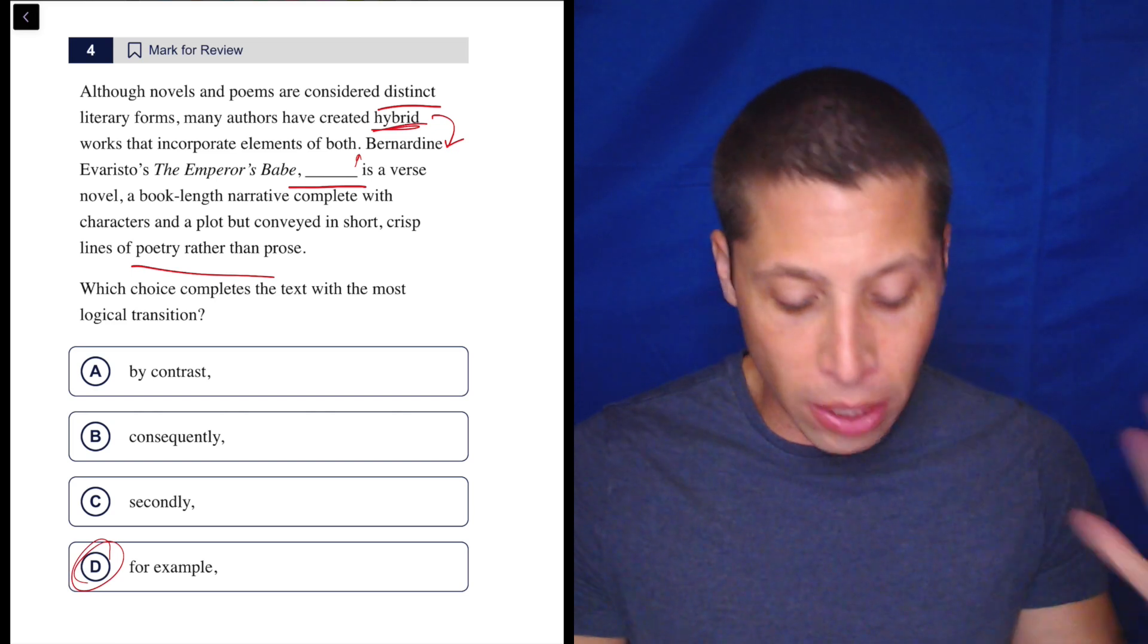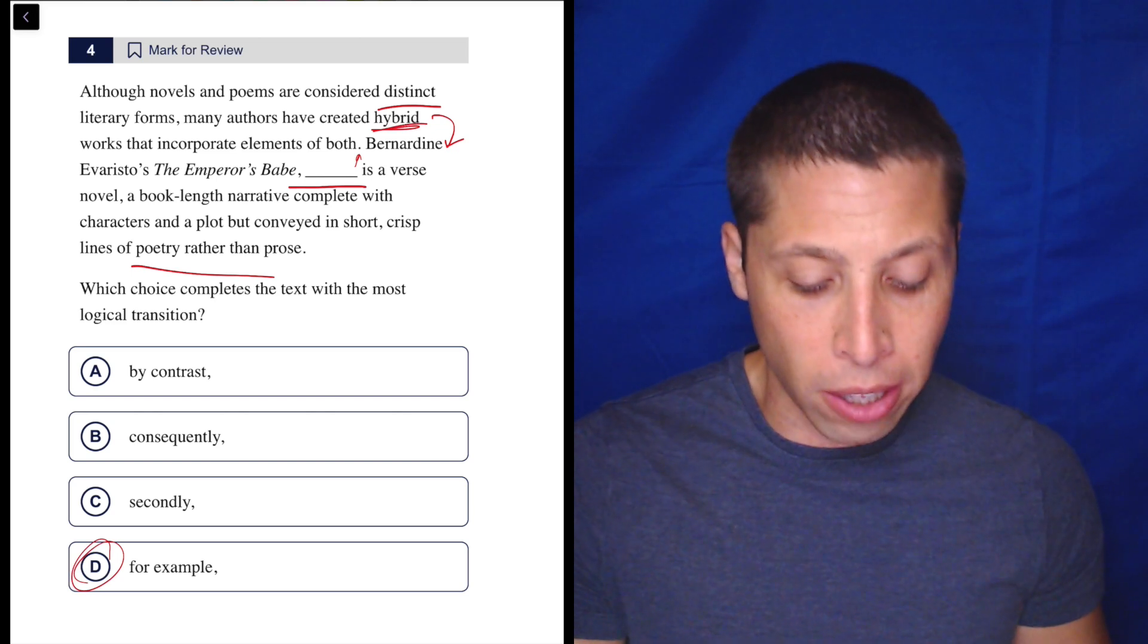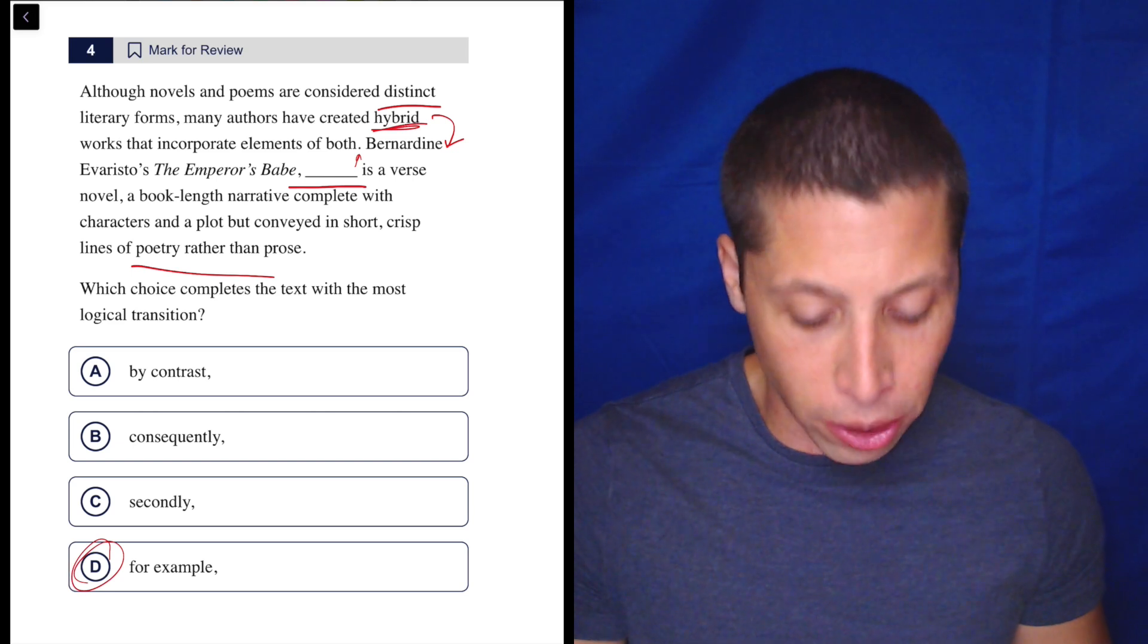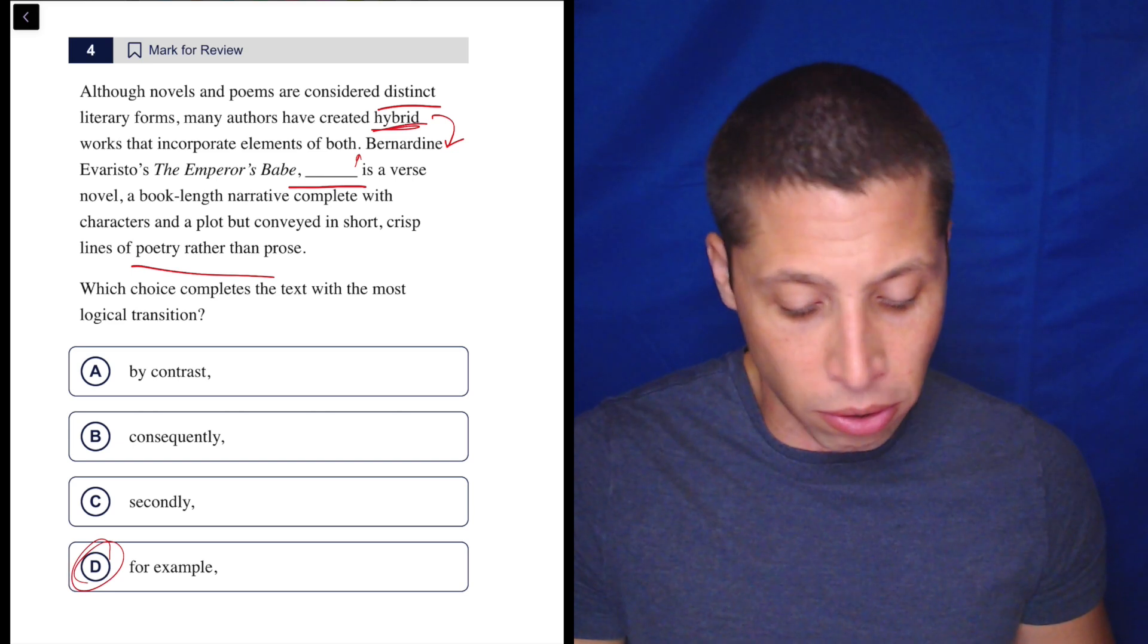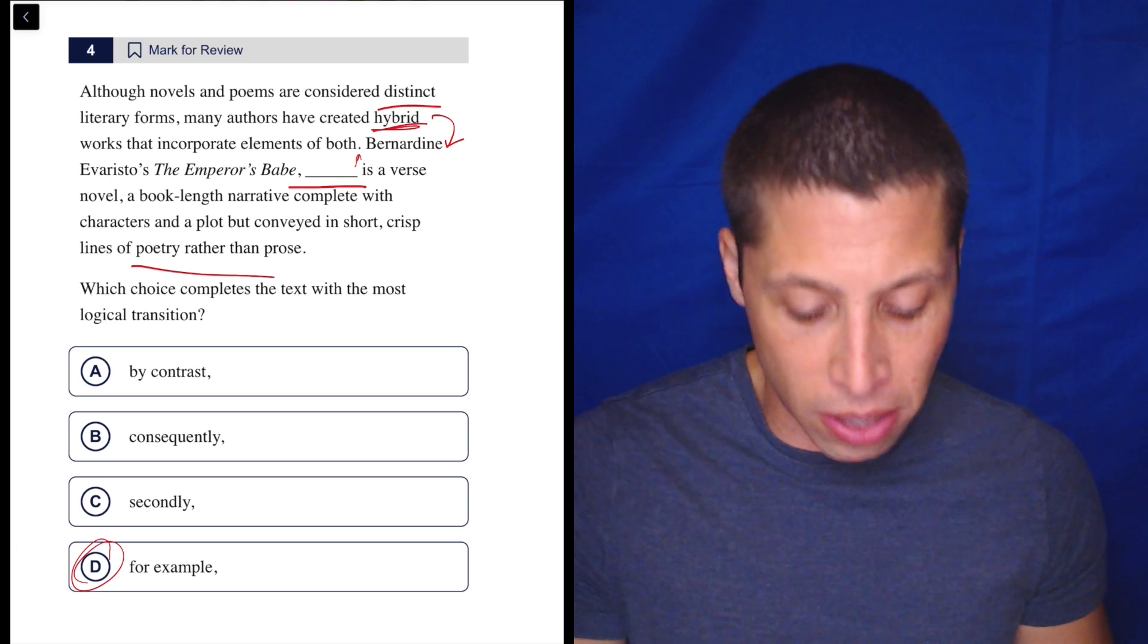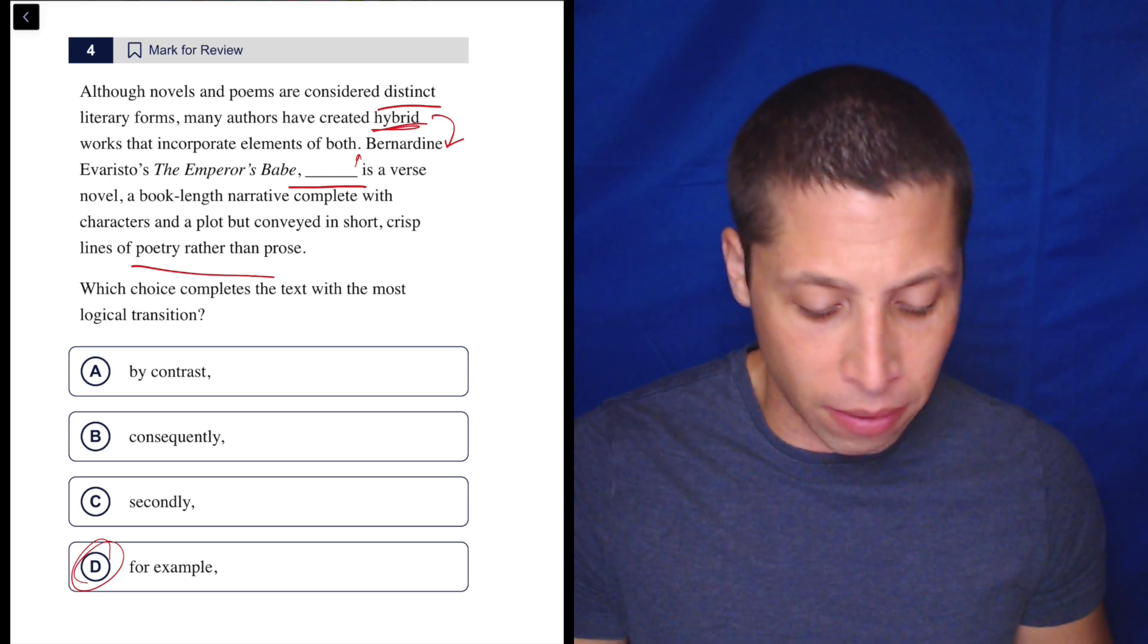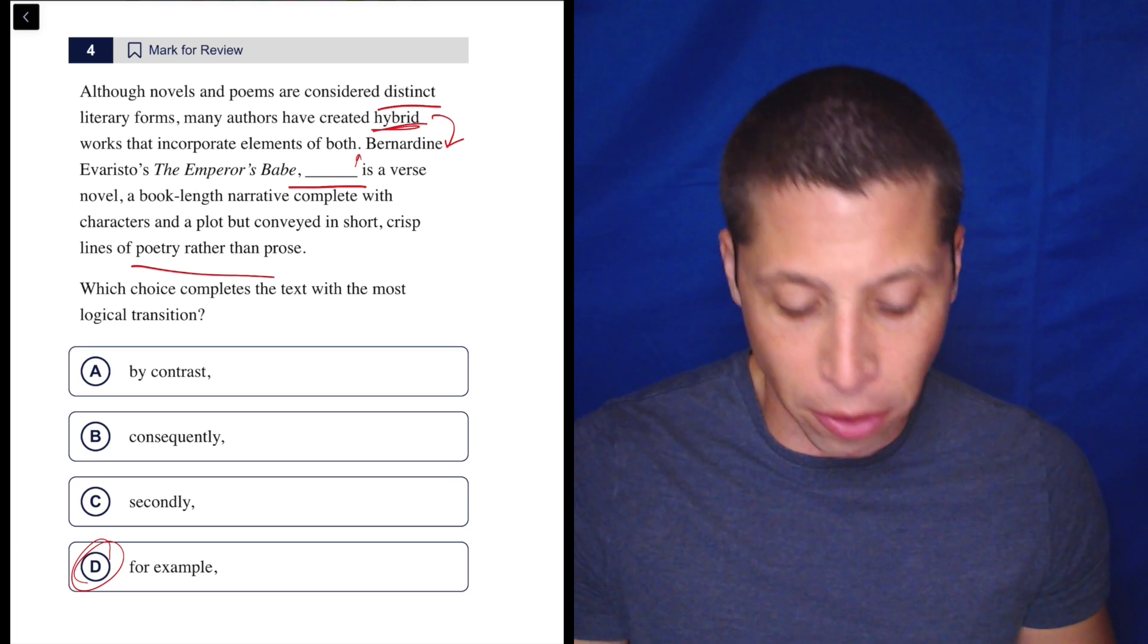We can literally just rearrange it to double check. Although novels and poems are considered distinct literary forms, many authors have created hybrid works that incorporate elements of both. For example, Bernardine Evaristo's Emperor's Babe is a verse novel—a book-length narrative complete with characters and plot but conveyed in short, crisp lines of poetry rather than prose.